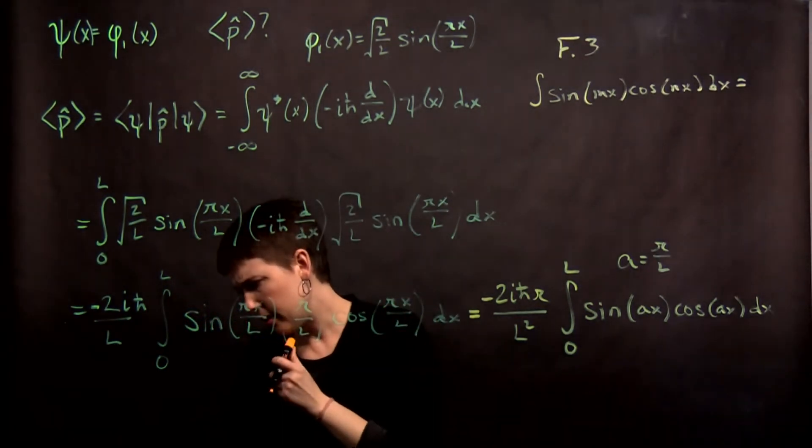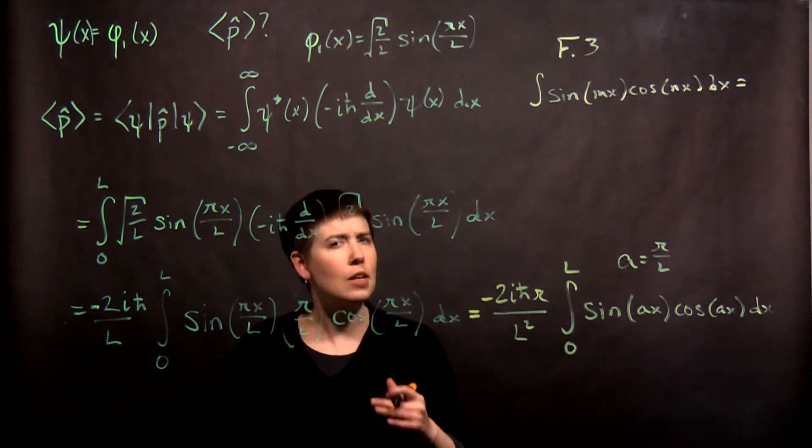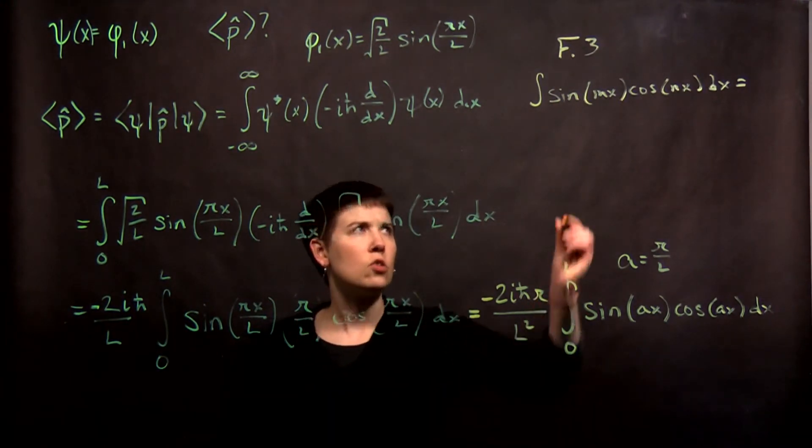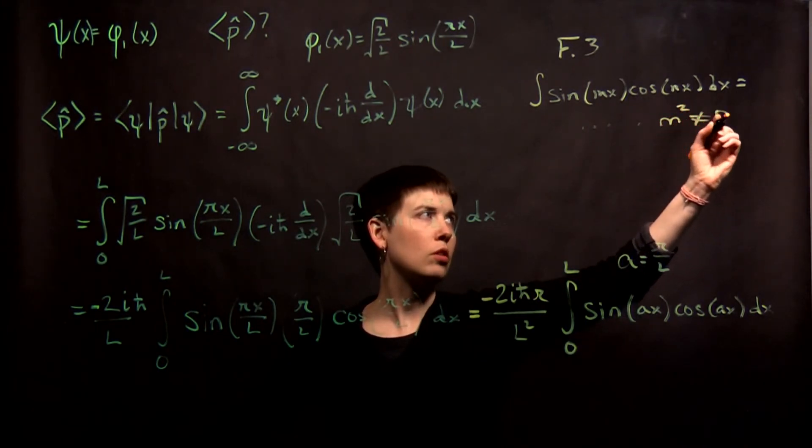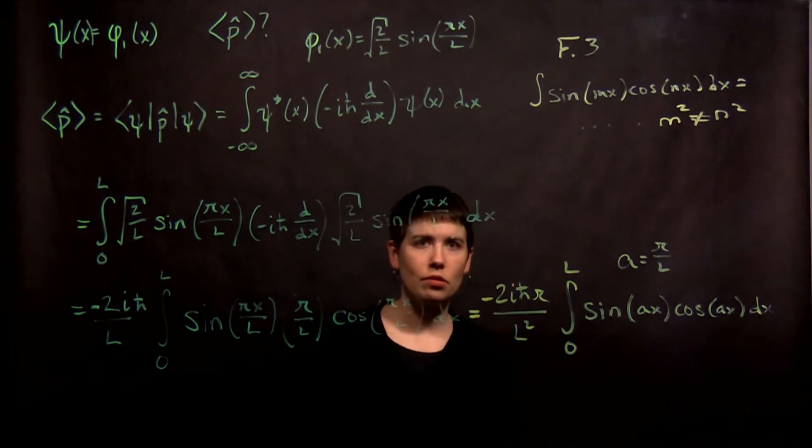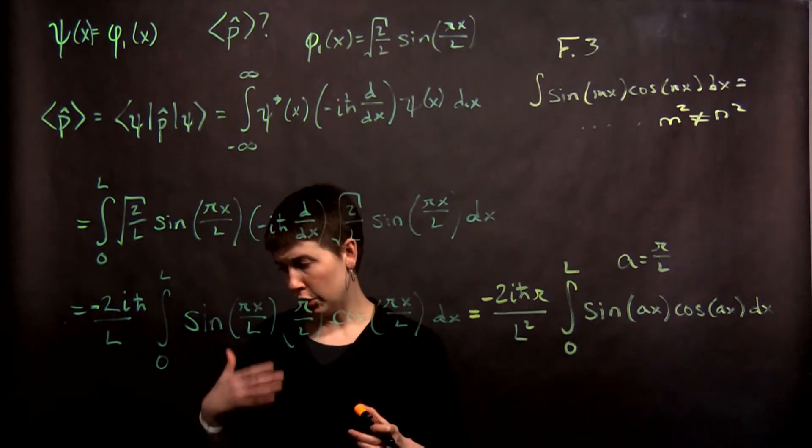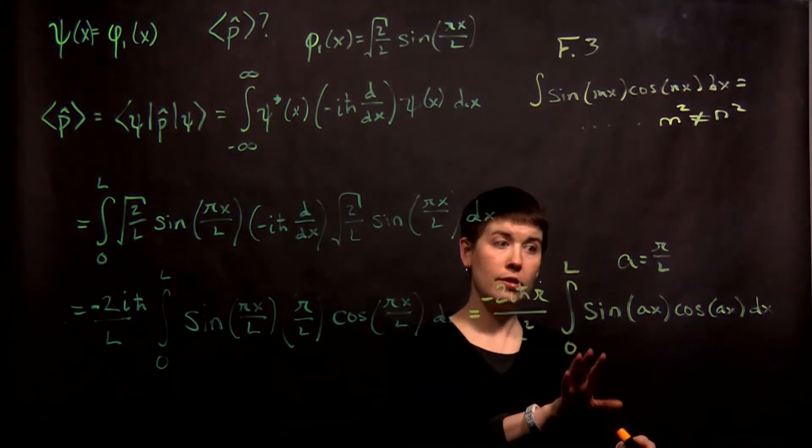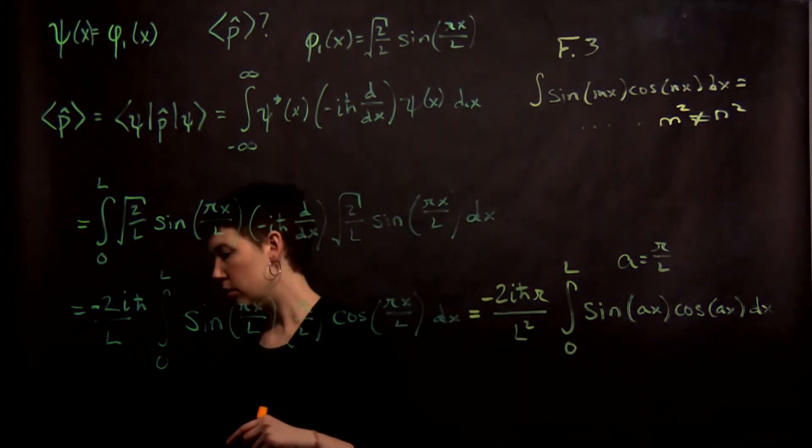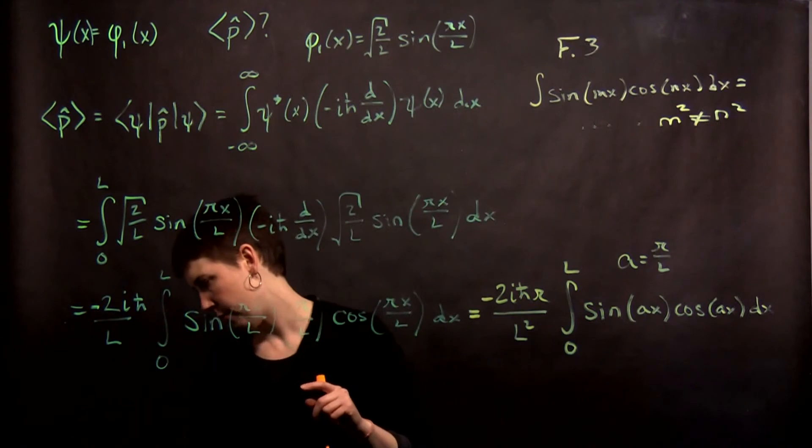If you look at f dot 3, it says that the integral of sine mx, cosine nx, dx equals all this stuff. What that's telling you is that these coefficients don't have to be the same. But if you look at the very end of it, it says m squared does not equal n squared. But it does for us. So this isn't the one we want to use, actually. I'm pointing it out for a reason, that we will have situations where we need to integrate something that looks like these, and these are not the same. But in this case, that's not the one you want.